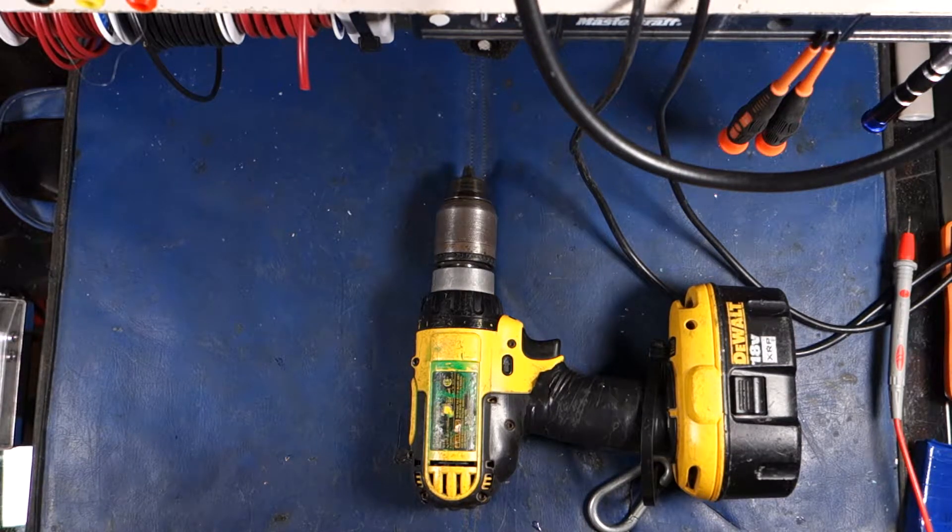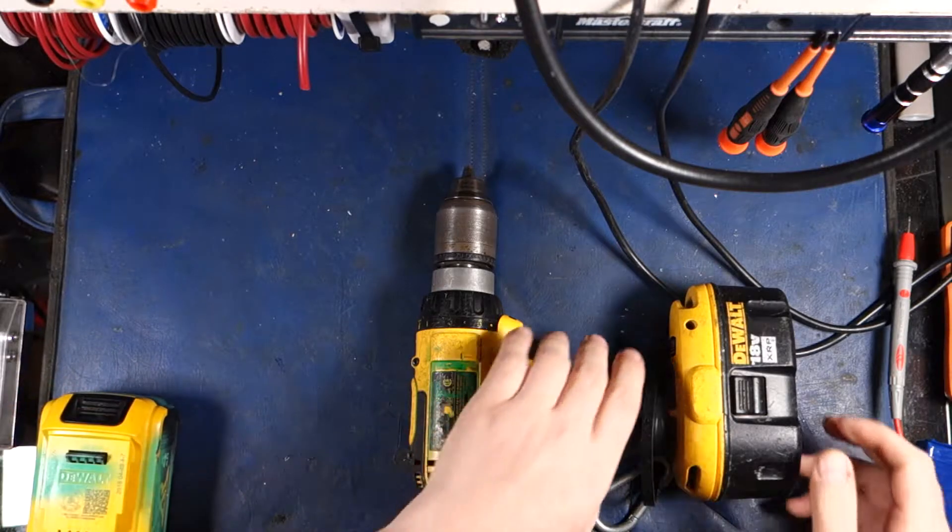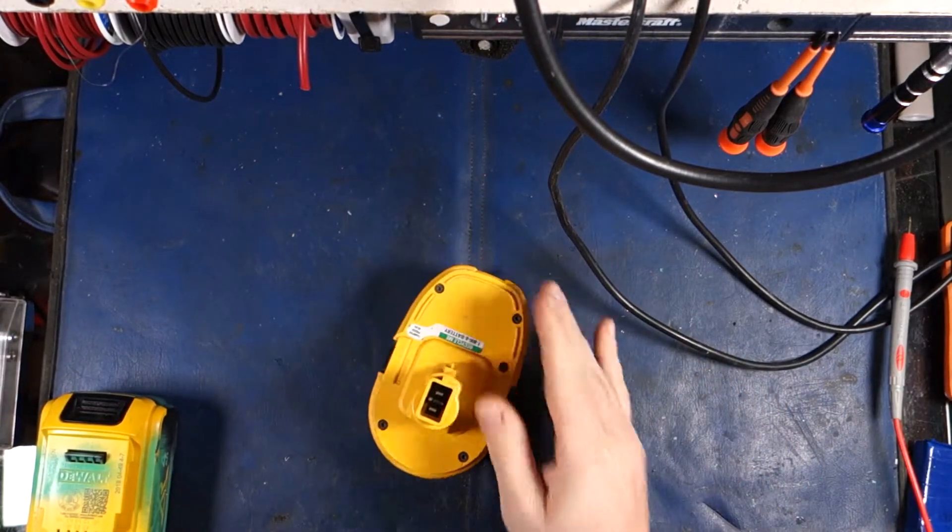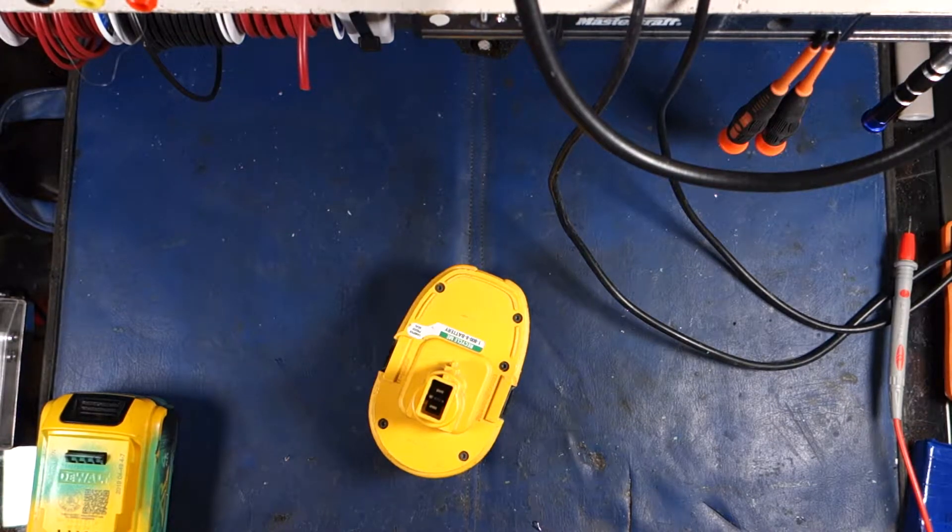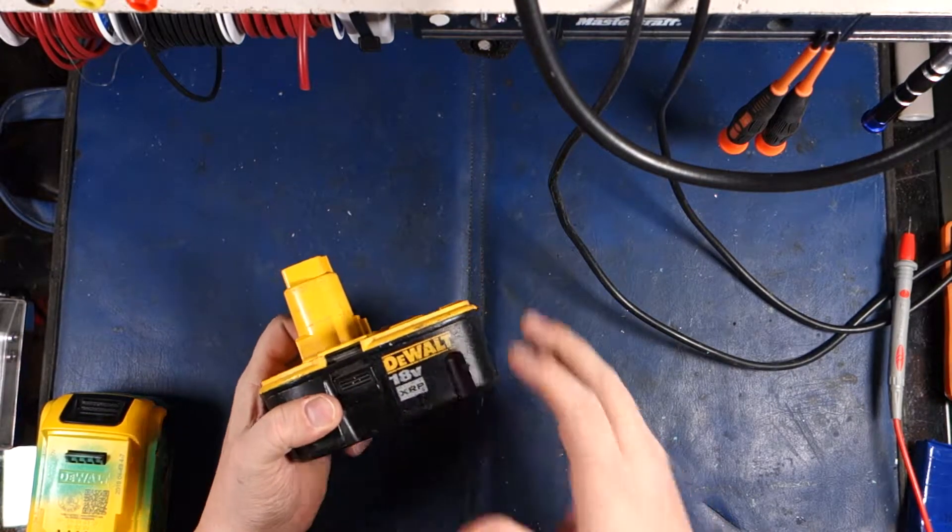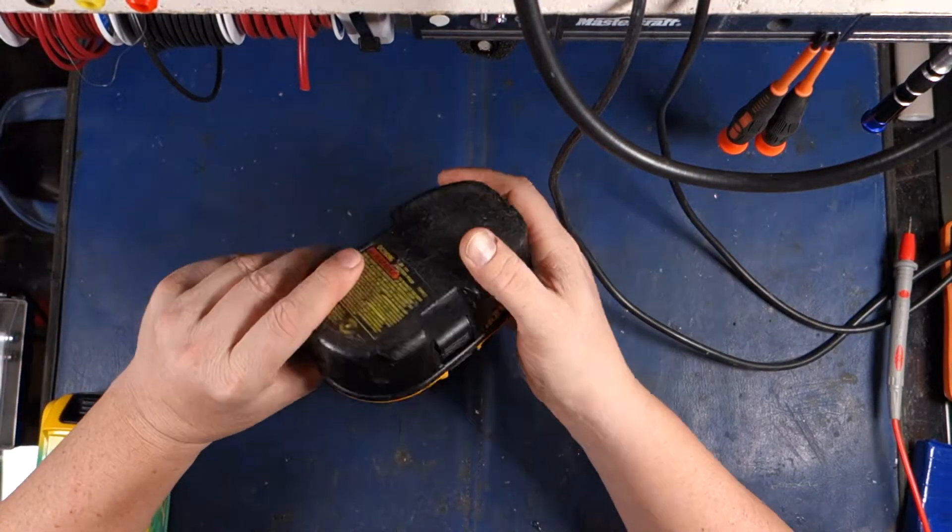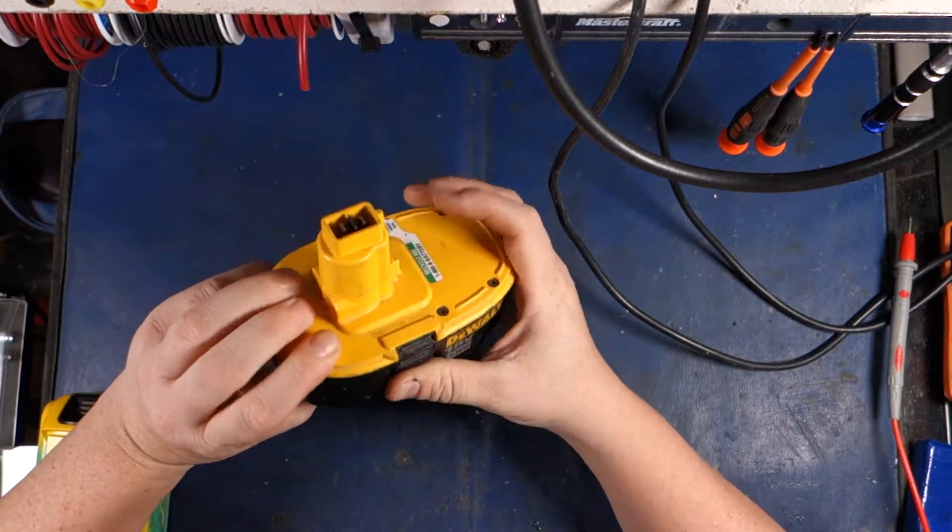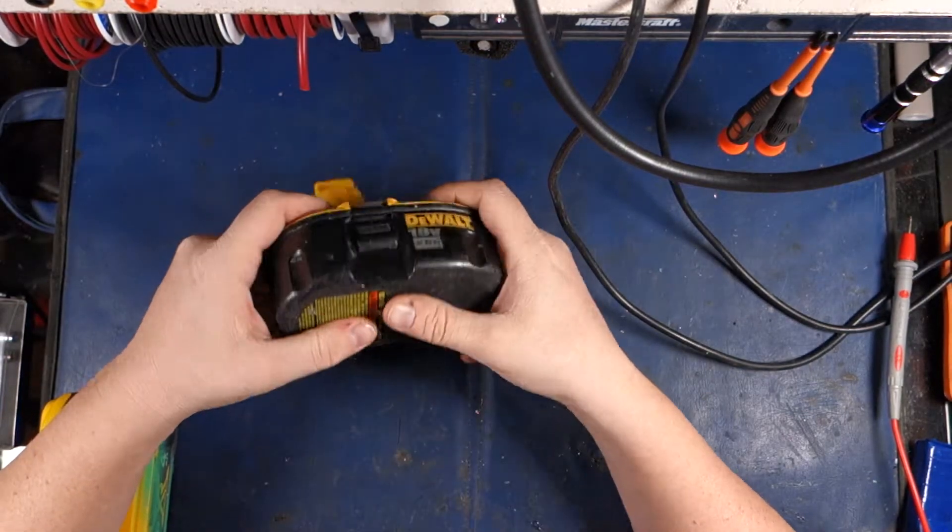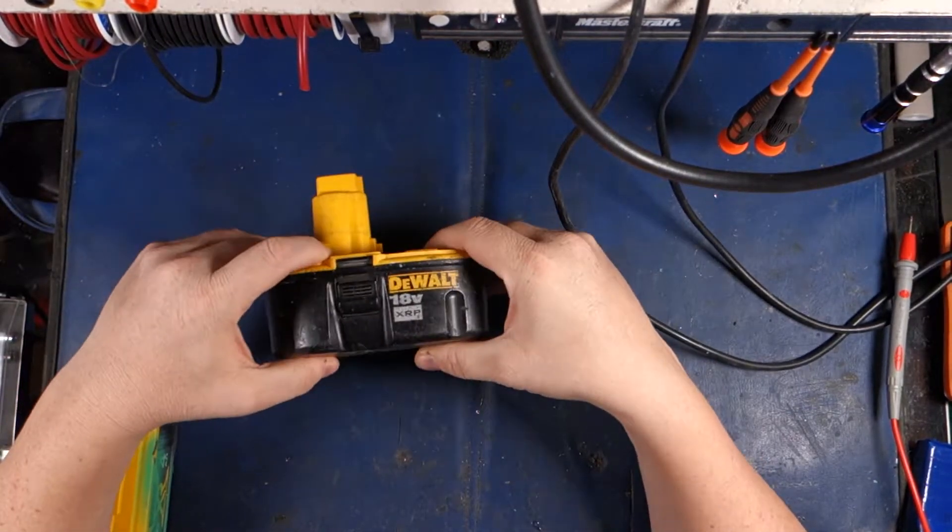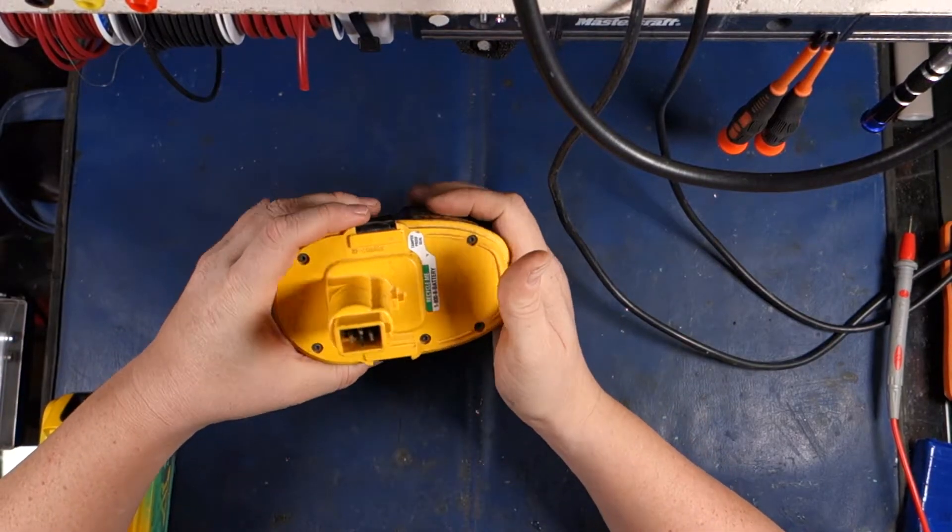So as you know, Dewalt has done away with the 18 volt nickel cadmium pack. That really pisses me off. Why? Because nickel cadmium is not as susceptible to damage or intolerances of high and low temperatures. It's tougher. It has a higher torque output. It's just an all-around better utility or industrial grade battery.